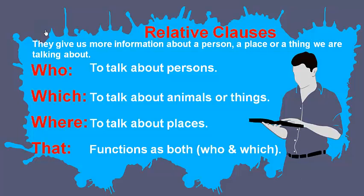These are the things that we have in the book. But if you remember, we also talked about 'when', which is used to talk about times. And of course 'whose', when we have a possessive pronoun, and 'whom', when we have an object that we will link the two sentences with. Alright, but our main focus should be on who, which, where, and that.